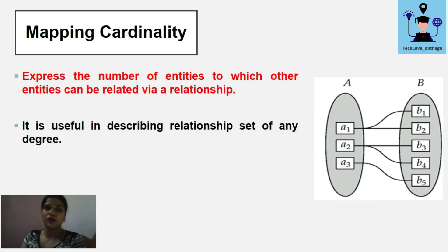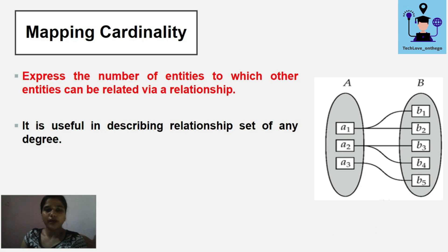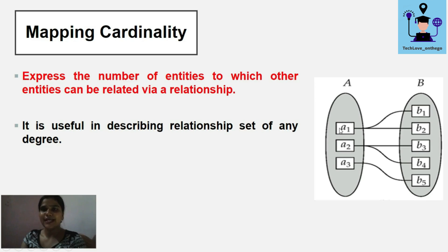In the same way, there can be more than three entity types in a relationship, which can be described as an n-ary relationship. Next is mapping cardinality, which expresses the number of entities to which other entities can be related via a relationship — describing how one entity set is related to another.